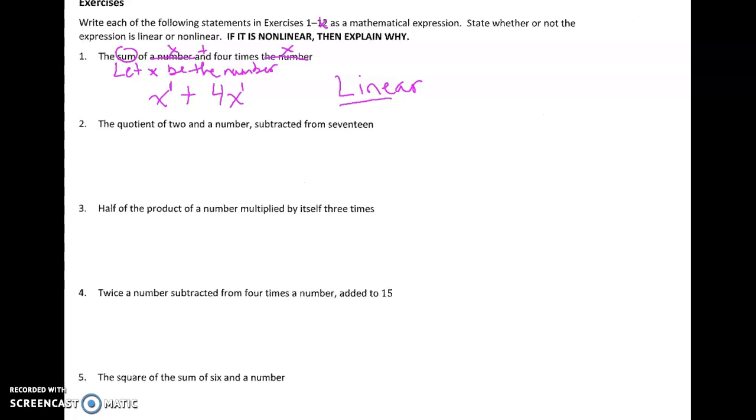Number 2 here. The quotient, remember, quotient means to divide, of 2 and a number subtracted from 17. Well, I'm still talking about a number here, so I want to say let x be the number. So we identify our variable. And so I'm going to say the quotient of 2 and x subtracted from 17. Here's that and sign. That means we're going to divide this, which comes first, 2 and x, then subtracted from 17. We're taking it away from 17, so 17 comes out front.